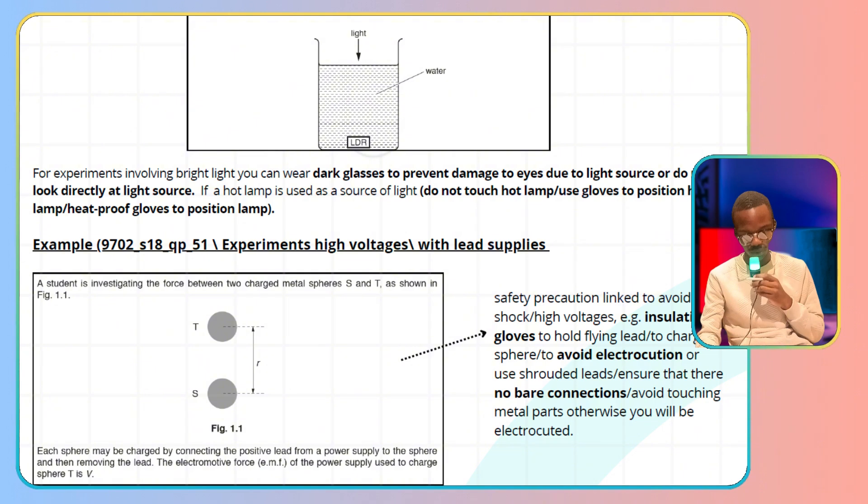If a hot lamp is used as the light source, do not touch the hot lamp. Or use gloves to position the hot lamp if you want to move it. I highly recommend you use heat-proof gloves to position the lamp.